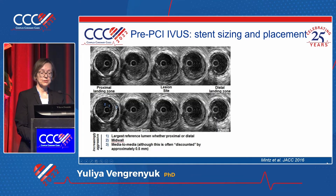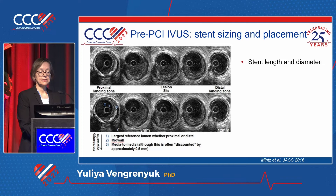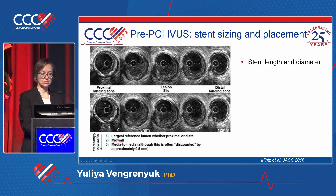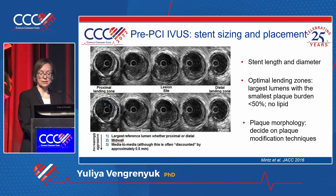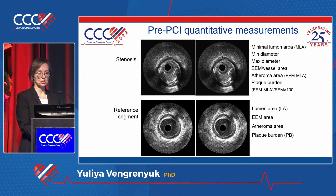How can we use IVUS before PCI? IVUS can help assess stent length and diameter based on measurements of lumen or vessel size at proximal and distal landing zones. The optimal landing zones should be the areas with the largest lumen and smallest plaque burden. IVUS before PCI can also characterize plaque morphology — a very important step to help decide if the lesion needs some kind of plaque modification.